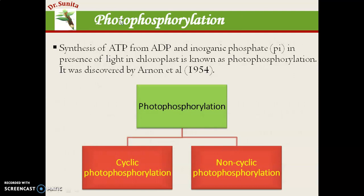Now, photophosphorylation. It is made up of two words: 'photo' and 'phosphorylation.' Phosphorylation means addition of a phosphate group; photo means in presence of light. So photophosphorylation means synthesis of ATP from ADP and inorganic phosphate in presence of light in the chloroplast. It was discovered by Arnon et al. in 1954.